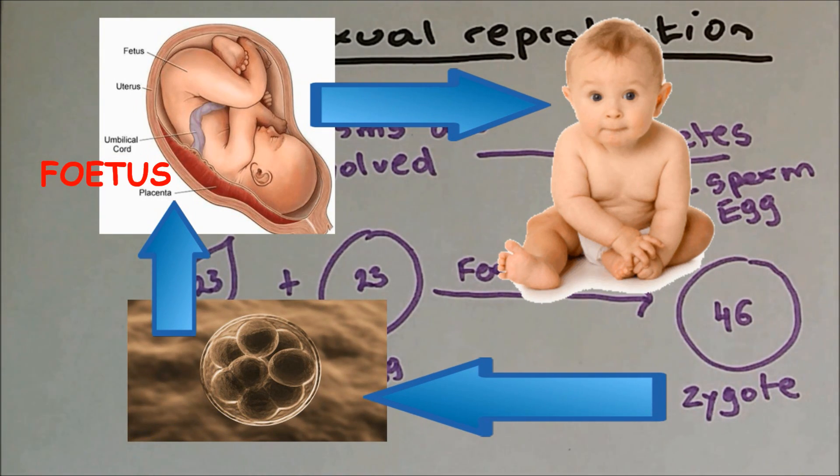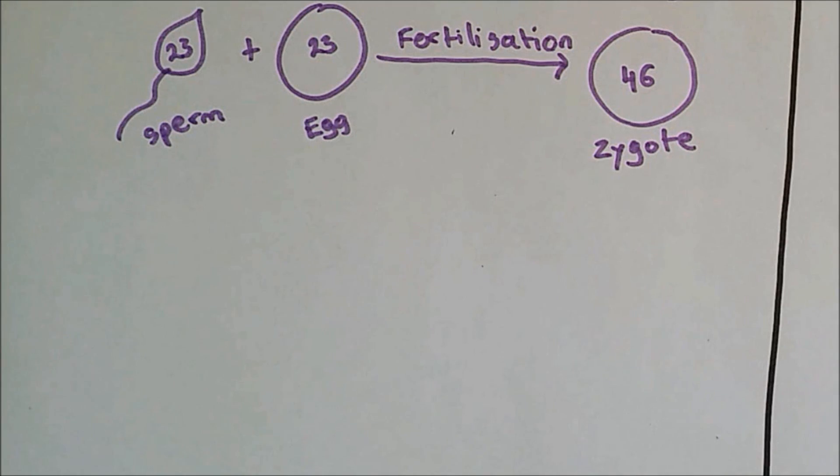The zygote grows into an embryo, and then the embryo into a fetus, then as a child. This child will have characteristics of both parents, half from the mother and half from the father. The reason why sexual reproduction does this is in order to increase genetic variation.